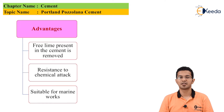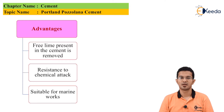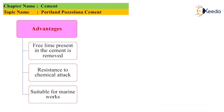The advantages of using pozzolana are: first, free lime present in the cement is removed; second, resistance to chemical attack; and third, it is suitable for marine works.